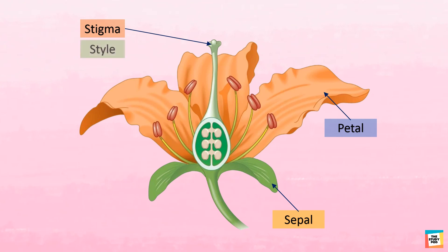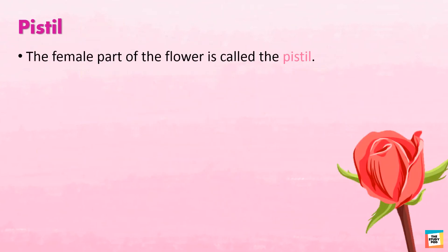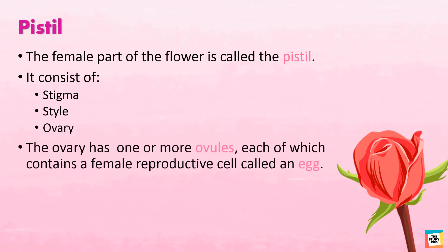The stigma, style, and ovary make up the female part of the flower, called the pistil. The ovary has one or more ovules, each of which contains a female reproductive cell called an egg.